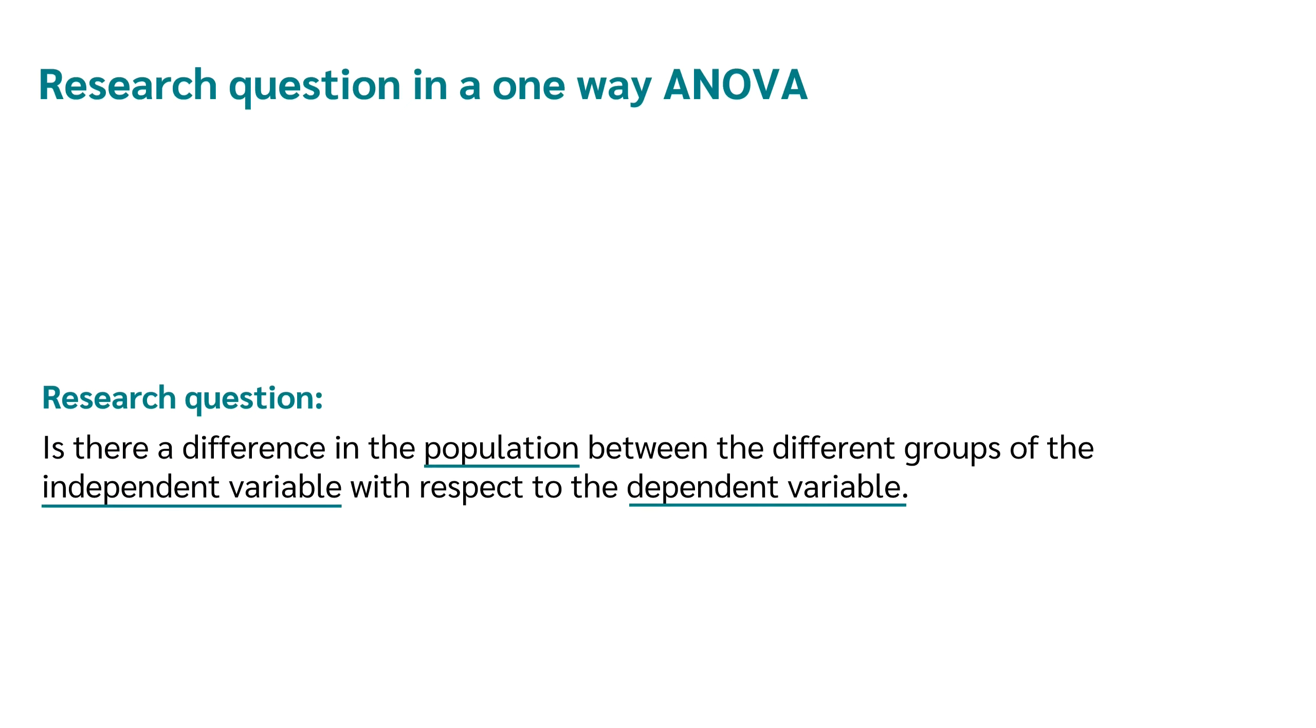So the next question is, what is the research question I can answer with using an ANOVA? The research question is, is there a difference in a population between the different groups of the independent variable in relation to the dependent variable? The independent variable is the variable with the different categories. In our example, it is the statistic software used. Here we have the three groups Datatab, SPSS and R. The dependent variable in our example is the age of the software users. We would like to know whether the groups of the independent variables have an influence on the dependent variable.